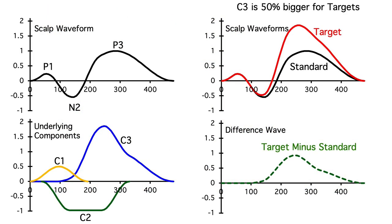So, difference waves are a common way of isolating specific ERP components. They're not perfect, and you need to think about whether a given study has really isolated the component of interest. But they're very simple, easy to understand, and super helpful overall.